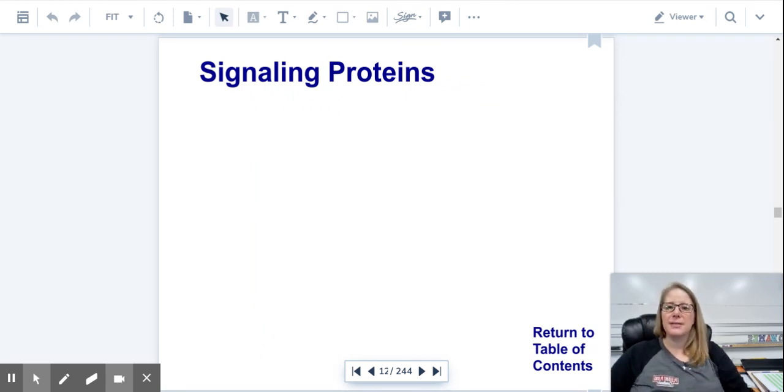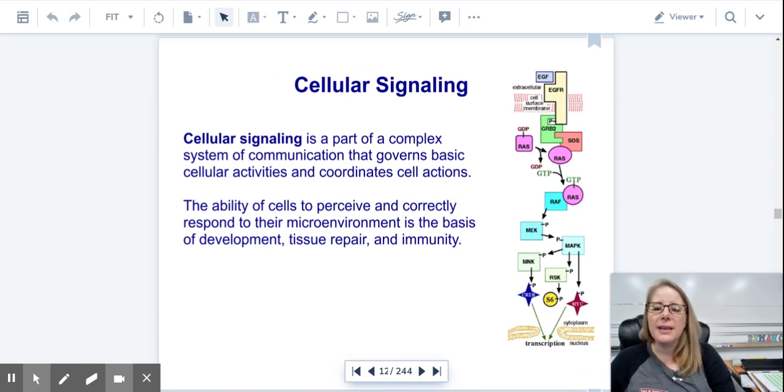Then there are proteins that signal. Cellular signaling is a complex system of communication that governs the basic cellular activities that do everything for the cell. The ability of the cells to perceive and correctly respond to their microenvironments is based on this. So tissue repair, immunity, all that is part of this. You have the cell membrane right here. You have the stuff on the outside of the cell, the extracellular. Then you have these signal proteins, and something will bond to it. Then it will cause this chain reaction as it sends information through until it gets to the nucleus of the cell. Then the nucleus decides we need to make more of this amino acid. So then transcription and translation will occur. Notice one of the things that is really moving is the phosphorus.